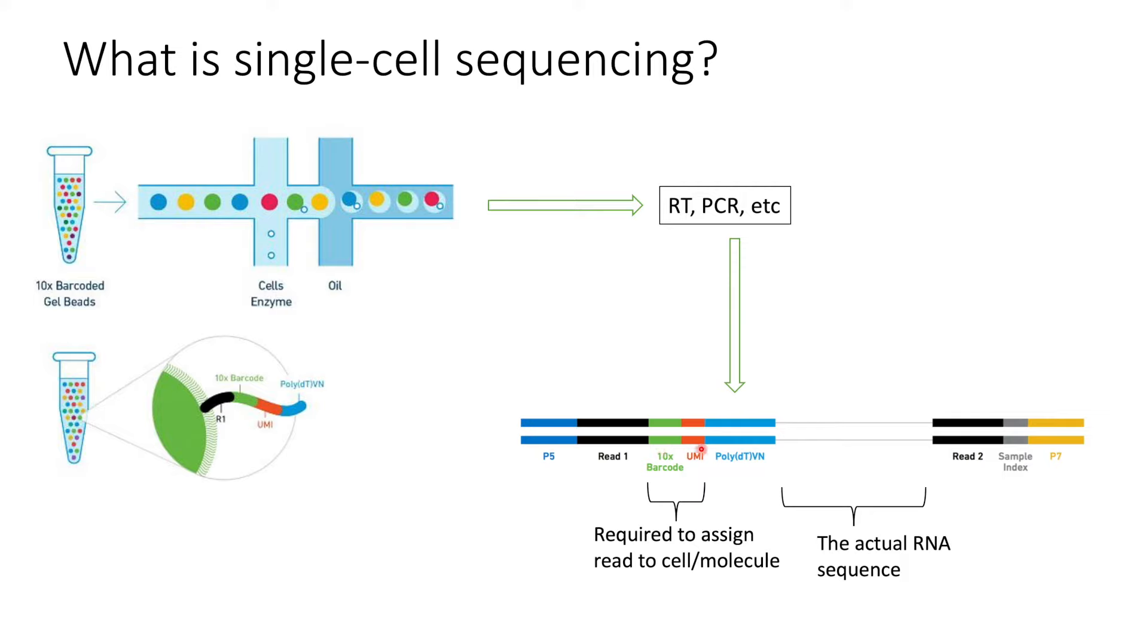And then you have the UMI, which is a unique molecular identifier. So it's another barcode that's not specific to an individual cell, but it gets amplified in the PCR steps so that you can differentiate between PCR duplicates and actual gene copies.